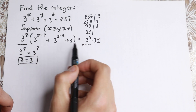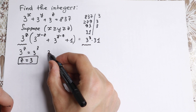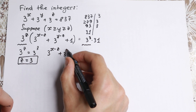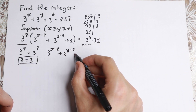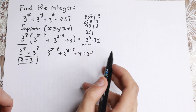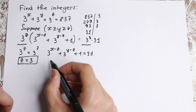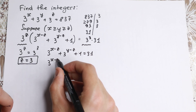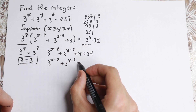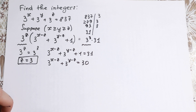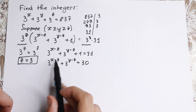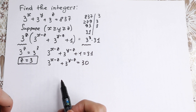Now the parenthesis must equal 31. Let's simplify further. We have 3 to the power x minus z, plus 3 to the power y minus z, plus 1, equal to 31. Bringing the 1 to the right-hand side, we get 3 to the power x minus z plus 3 to the power y minus z equal to 30. We already know z, so we need to find x and y.